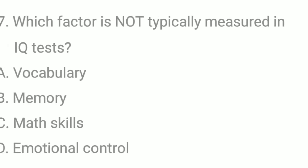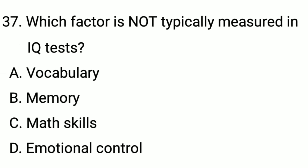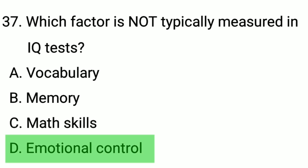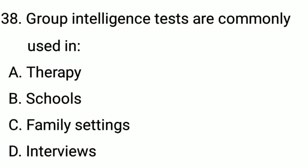Q37. Which factor is not typically measured in IQ tests? The correct option is option B: emotional control. Q38. Group intelligence tests are commonly used in... The correct option is option B: schools.